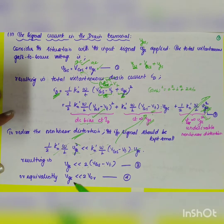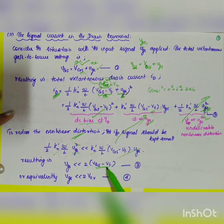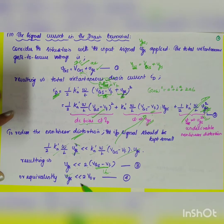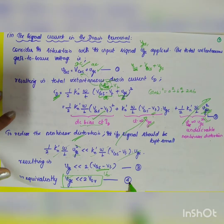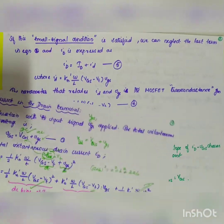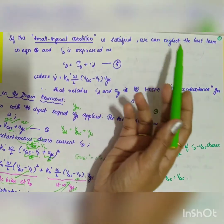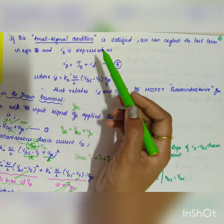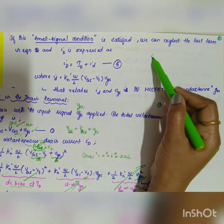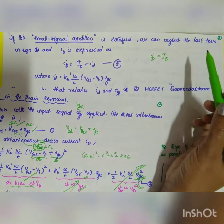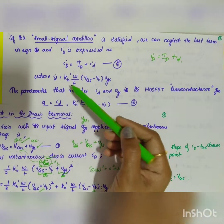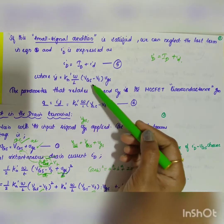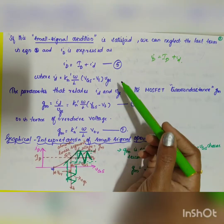The small signal condition is: vgs ≪ 2 × VOV. If this condition is satisfied, we can neglect the last term, and the total drain current iD is expressed as the sum of the DC component ID = (1/2)KN'(W/L)(VGS − VT)² and the AC signal component KN'(W/L)(VGS − VT) × vgs.